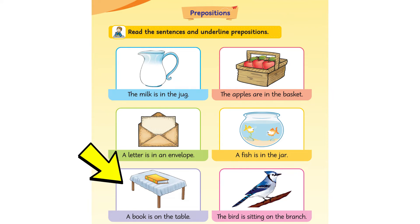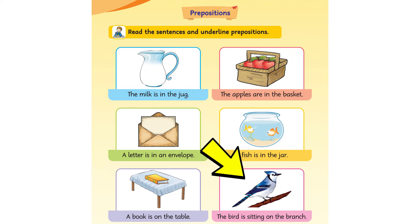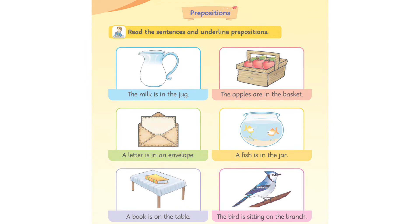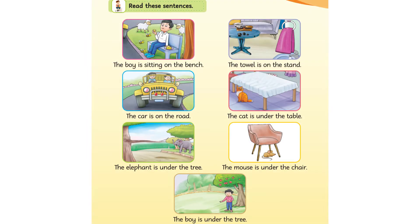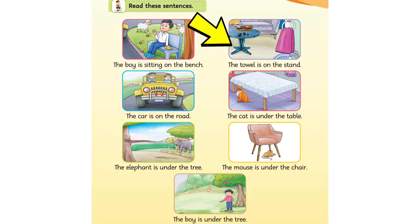A book is on the table. The bird is sitting on the branch. Let us read these sentences. A boy is sitting on the bench. The towel is on the stand.